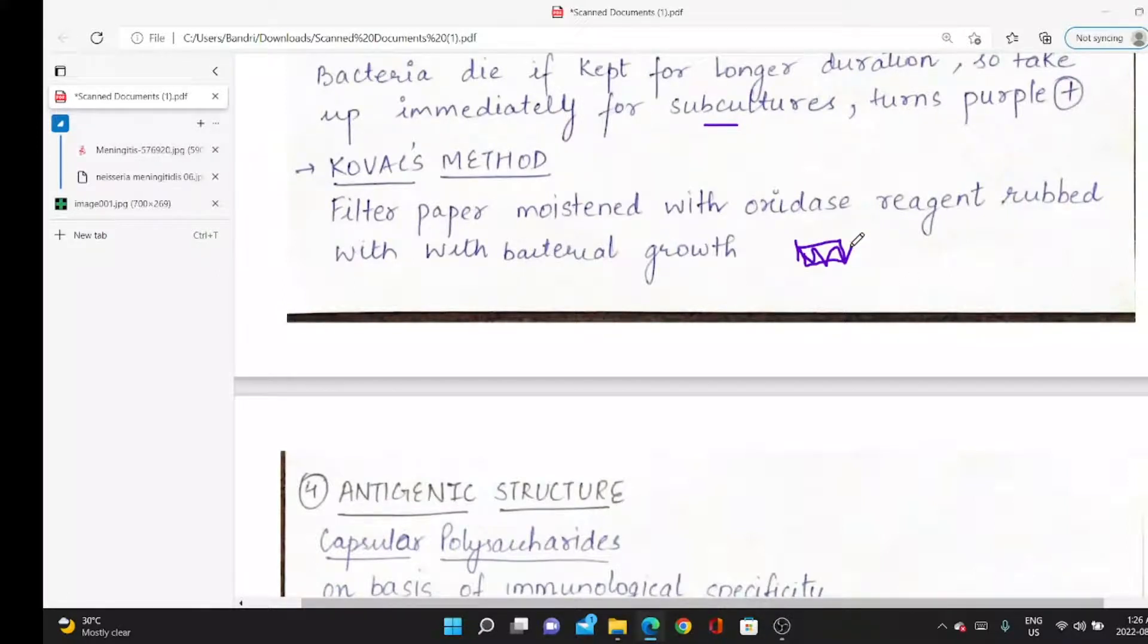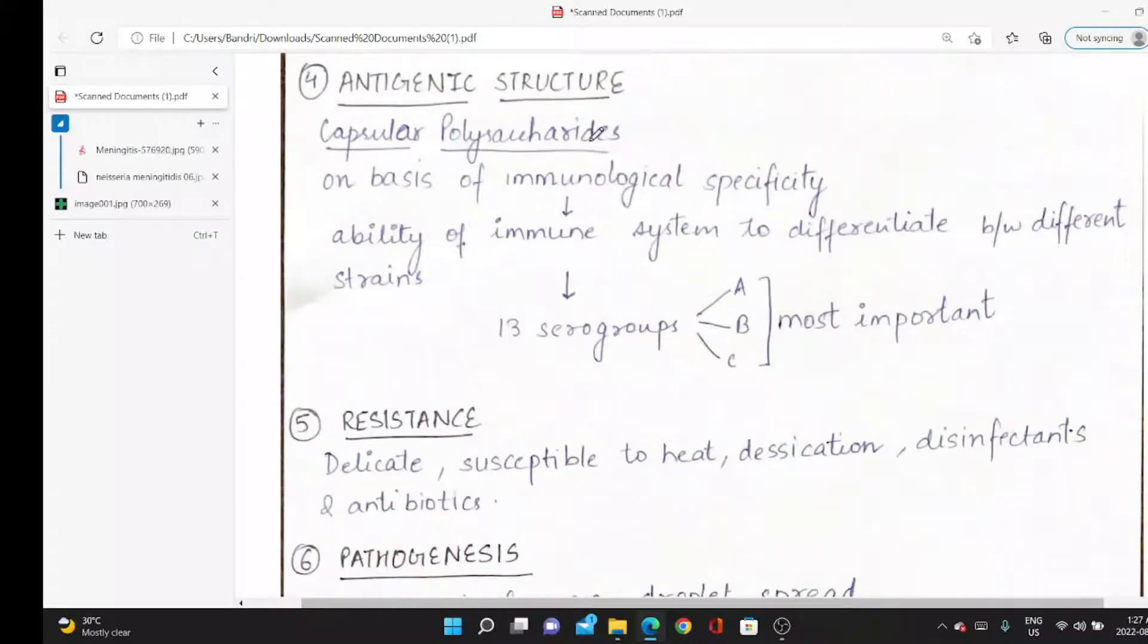Antigenic structure: can be capsulated and non-capsulated. Capsulated ones are capable of causing infection. Capsular polysaccharides are divided into 13 serogroups, out of which A, B, C are most important.